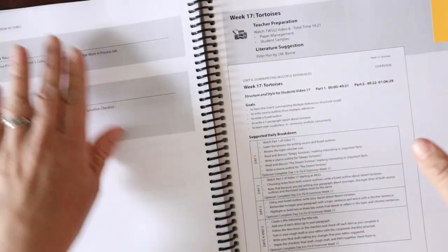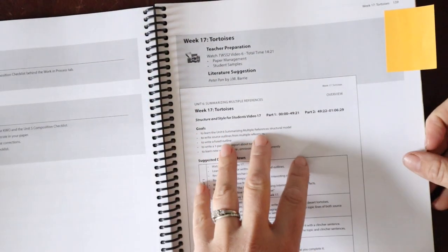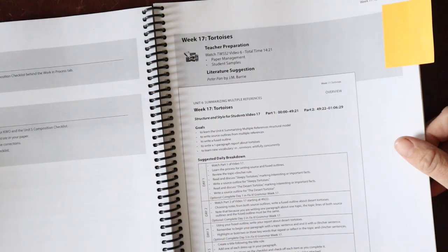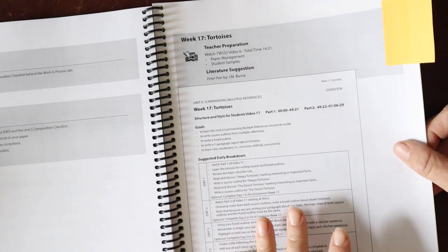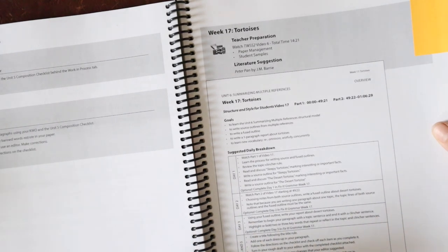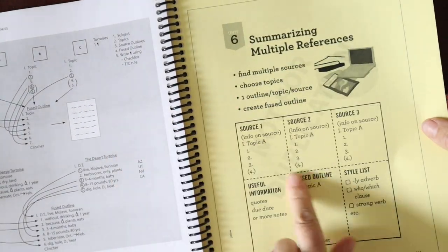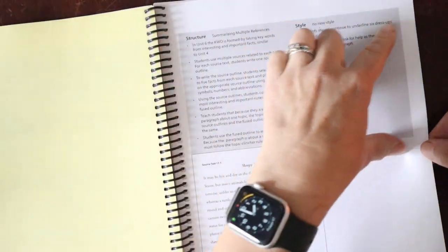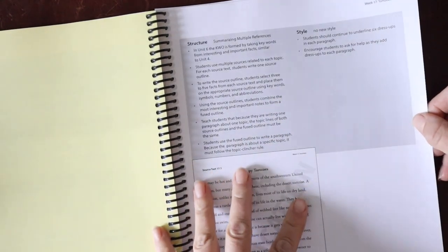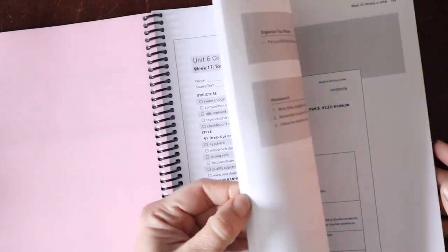If we flip to unit six, we're summarizing multiple references. This is where we're taking in multiple sources and we're learning how to summarize those and combine them into one written piece. This is a skill that everybody needs to have. I don't care what job you're doing in the future. You are going to need to be able to summarize multiple things and then spit that back out in your own words and combine it all together. So starting to work on those skills at a younger age with the scaffolding tool is going to help them grow into independent adult writers that can do this without staring at a screen or having AI do it for you. Each of these lessons has a video component that they tell you where to find.